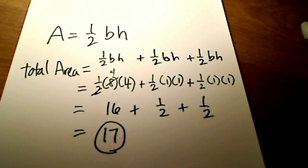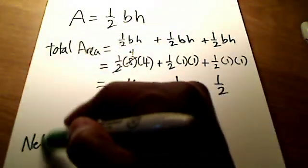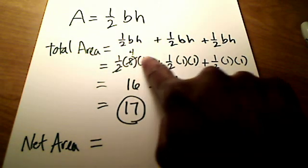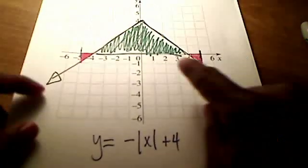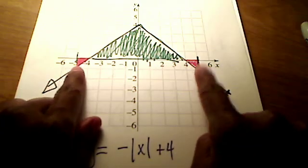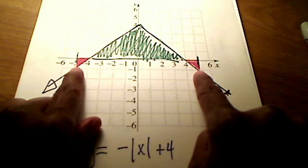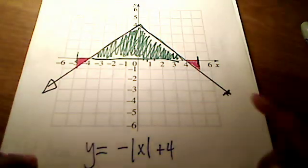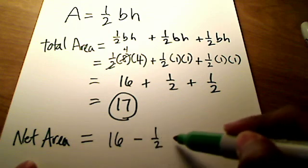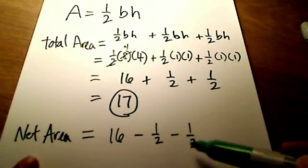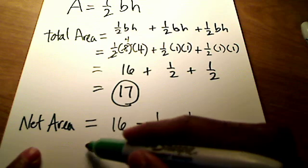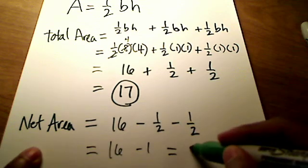Now for the net area, the formula changes slightly. Any area above the x-axis — like the green triangle — is positive. Anything below the x-axis — like the two small red triangles — is negative. So the net area is 16 minus one-half minus one-half, which equals 16 minus 1, giving a net area of 15.